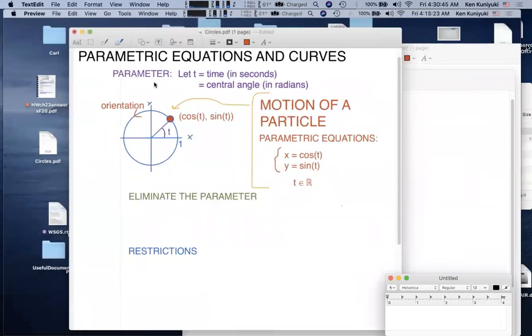For example, let's consider this parameter t, which represents time in seconds, say, or the central angle of this circle, this unit circle, in radians. We can describe the motion of this red particle using these parametric equations, x equals cosine of t and y equals sine of t, where t is allowed to vary over the reals, all reals.